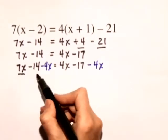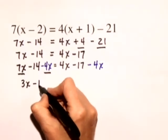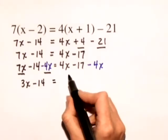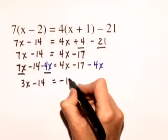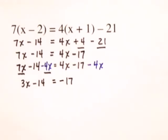On the left hand side, 7x minus 4x gives us 3x and we have minus 14 is equal to, on the right hand side we just have negative 17 since the 4x minus 4x adds to 0.